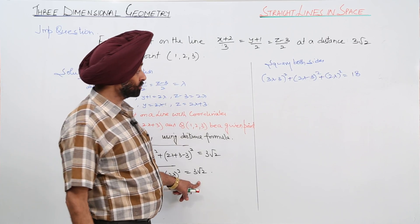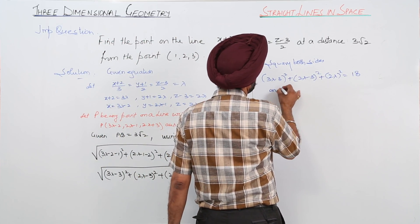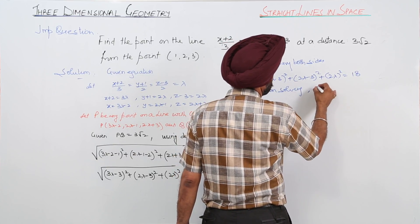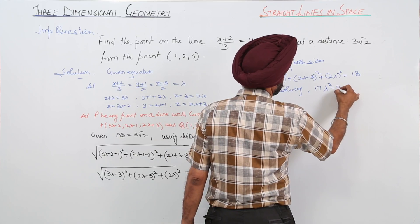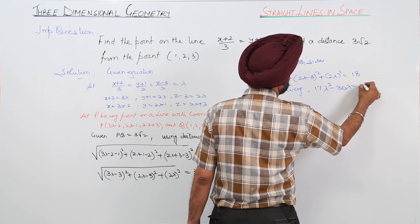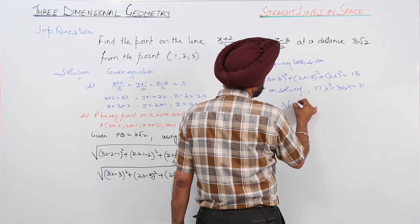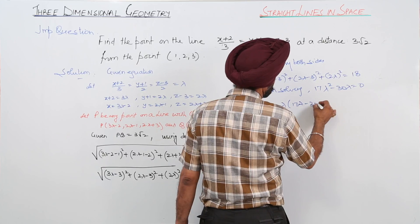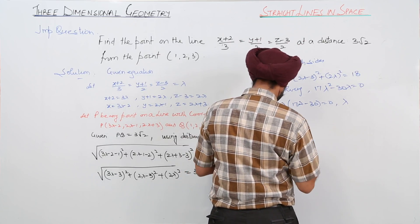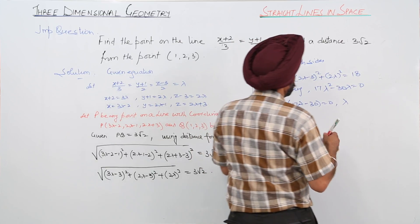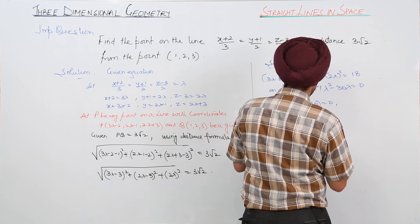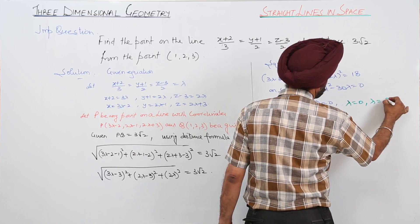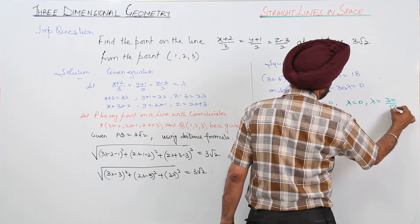On solving: 17λ² - 30λ = 0, taking λ common gives λ(17λ - 30) = 0. Therefore λ = 0 or λ = 30/17.